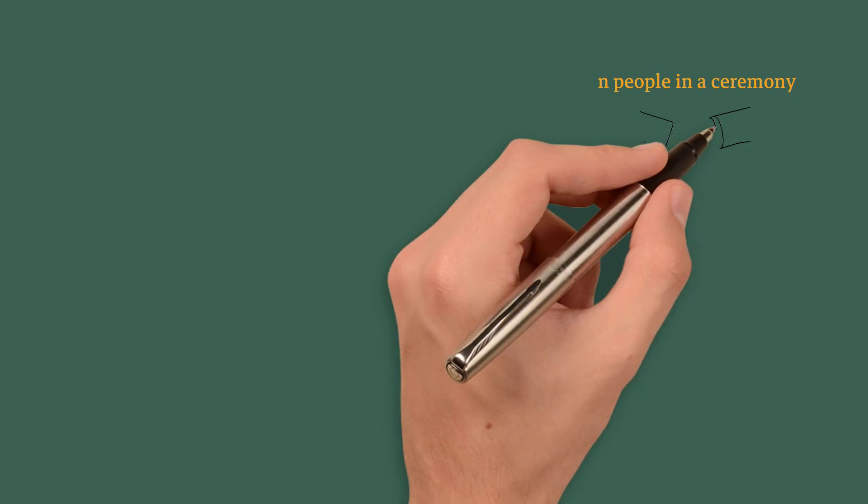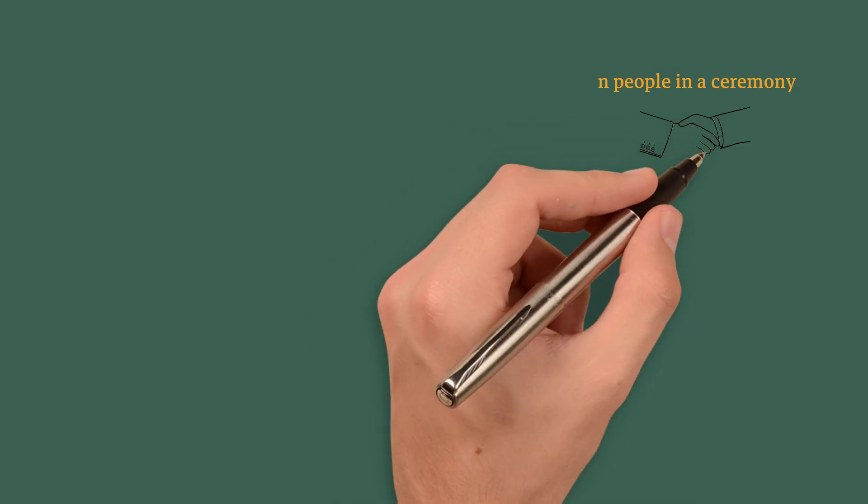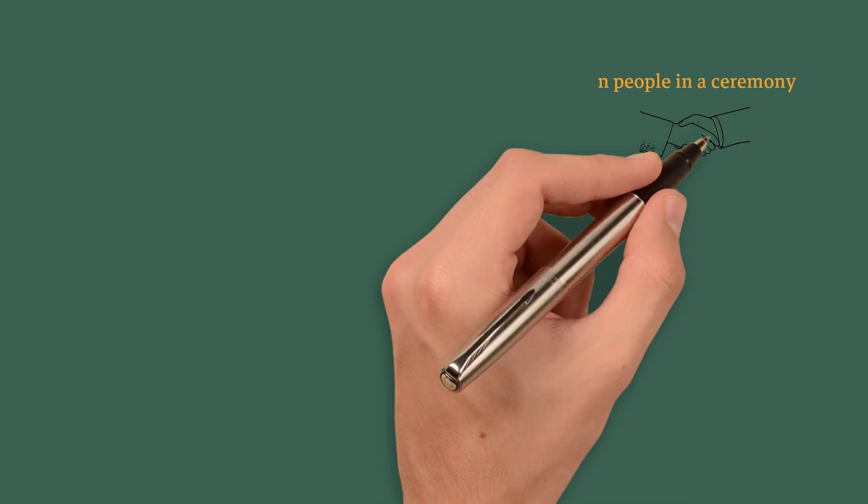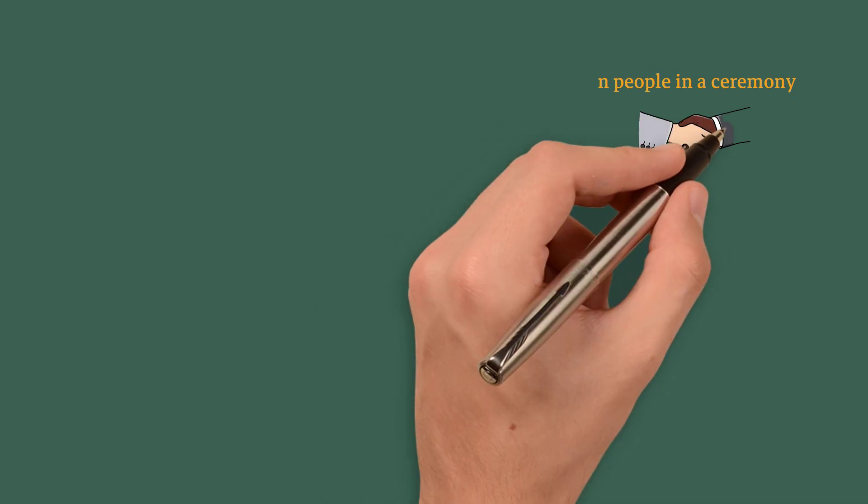Now let's take a look at another example. Assume that we have n people in a ceremony, some pairs of them shake hands with each other, and each pair will shake hands with each other at most once. Now we want to prove that there will be two people who have shook hands with equal number of people.